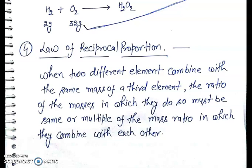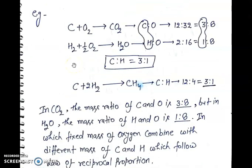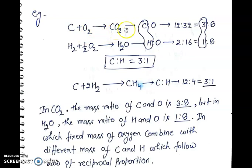For example, when two different elements — carbon and hydrogen — combine with the same mass of a third element, that is oxygen: when carbon combines with oxygen to form carbon dioxide, the mass ratio of carbon and oxygen in carbon dioxide is 12:32, and the simple mass ratio of carbon and oxygen in carbon dioxide is 3:8.